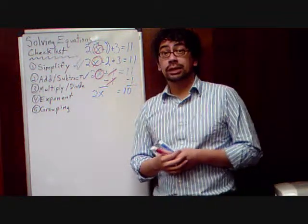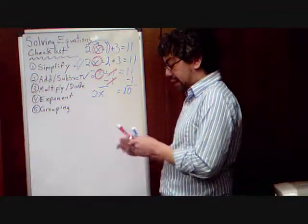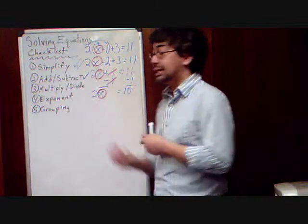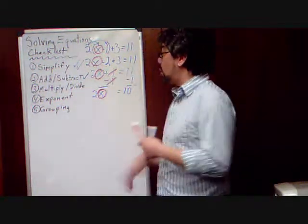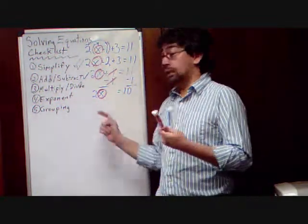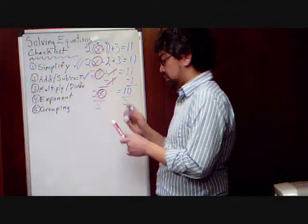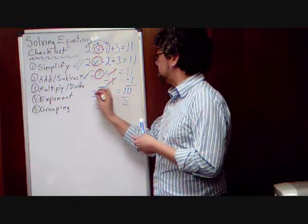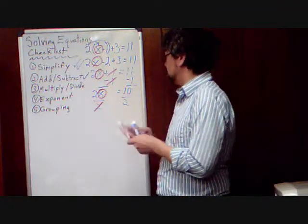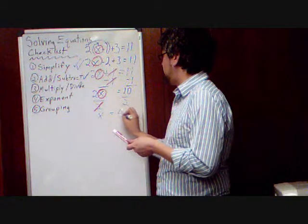We can now move to multiply, divide. Notice here we've got a 2 in front of that x we're trying to isolate. So, we want to do the opposite of multiplying by 2. We want to divide by 2. Cancels out the 2s. Leaving x equals 5.